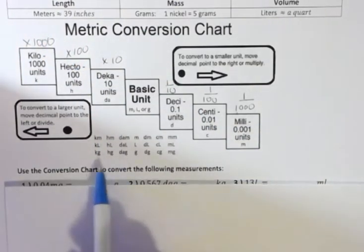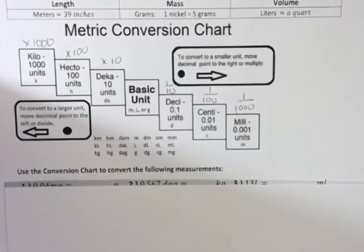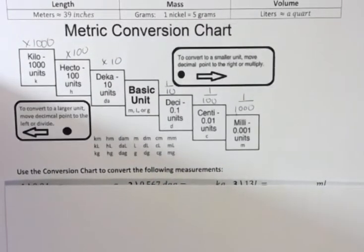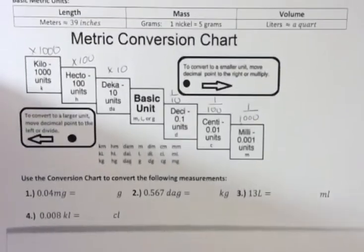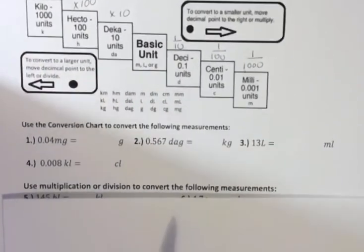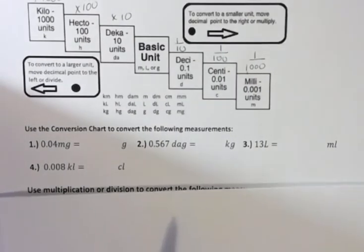This is the little chart written out down here and the abbreviations where the prefixes are lowercase: d, c, h, k, and so forth. So we use the conversion chart to convert the following measurements.